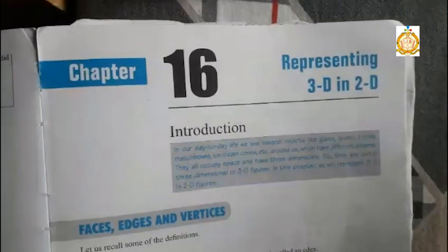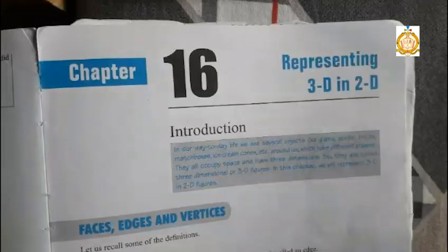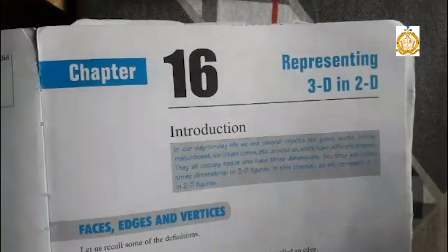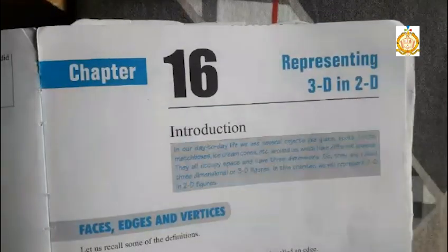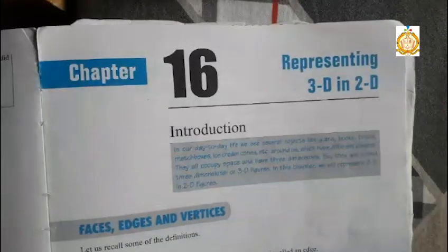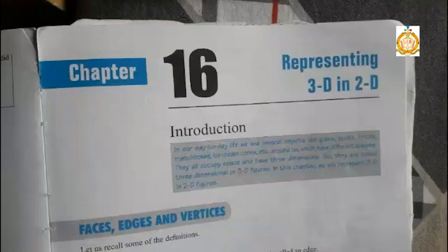Students, 2D figures are those figures which we can draw in our notebook, and 3D figures are those figures which we can draw in our notebook and also hold in our hands. That is the main difference between 2D and 3D figures. 2D figures have only 2 axes: x-axis and y-axis. 3D figures have 3 axes: x-axis, y-axis, and z-axis.